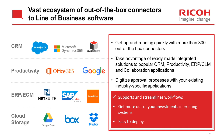There is a vast ecosystem of out-of-the-box connectors to line-of-business software, including CRM integrations with Salesforce, Dynamics, and Sugar; productivity solutions like Office and Google; ERP solutions like SAP; Laserfiche; and cloud solutions like Google Drive, Box, and Dropbox. With more than 300 connectors, you can get up and running quickly, digitize the approval process with existing industry-specific applications, and streamline workflows to get more out of existing investments — and it is easy to deploy.